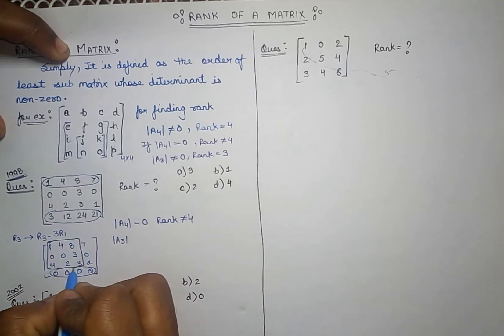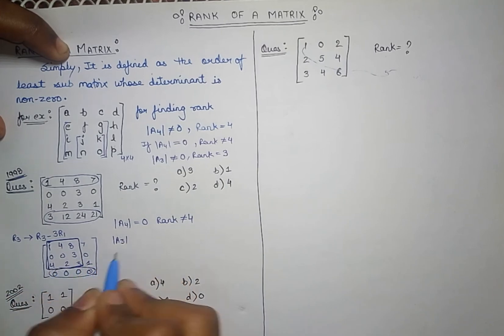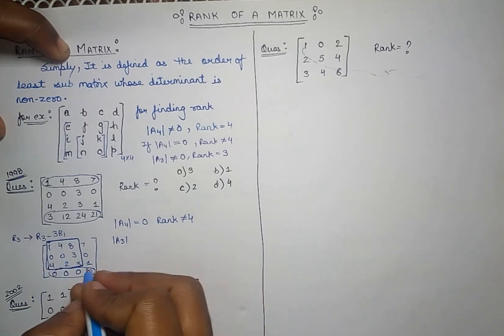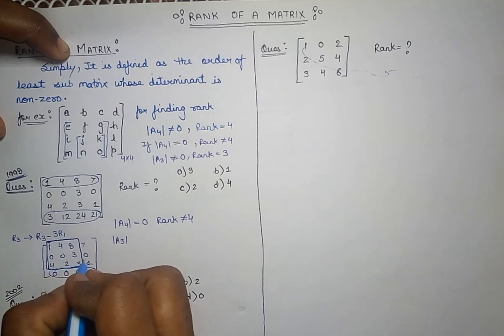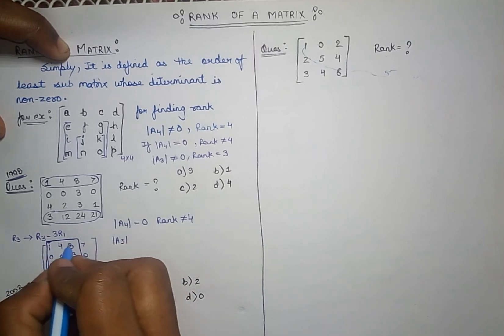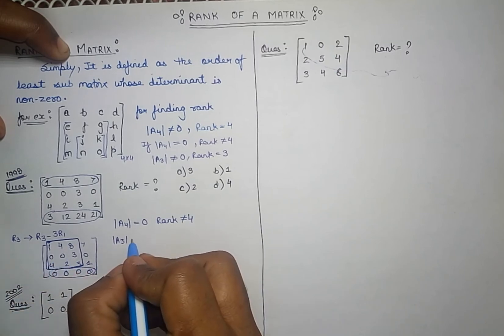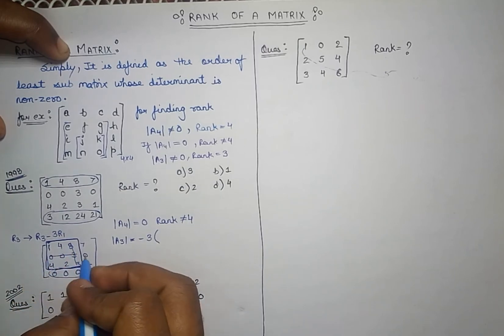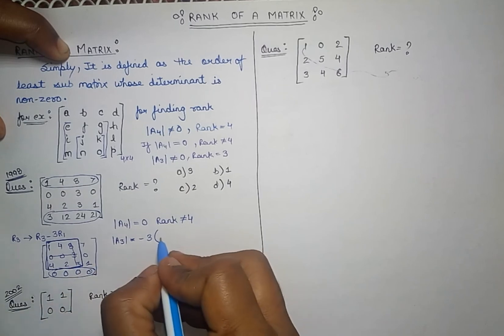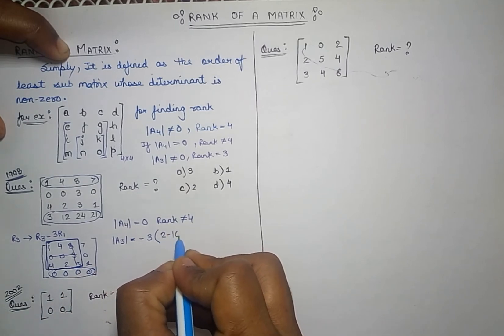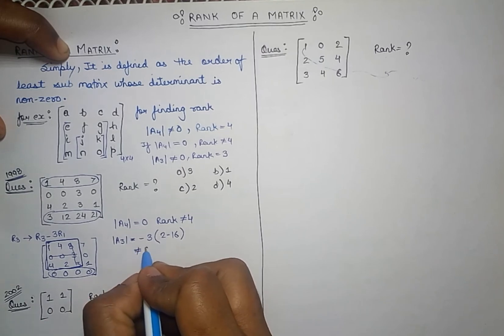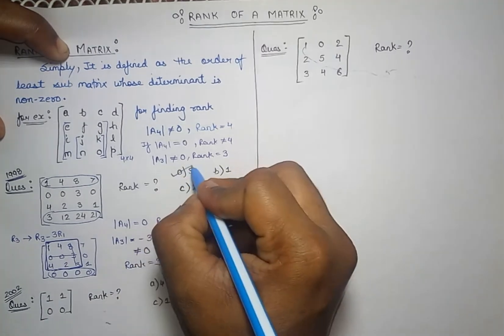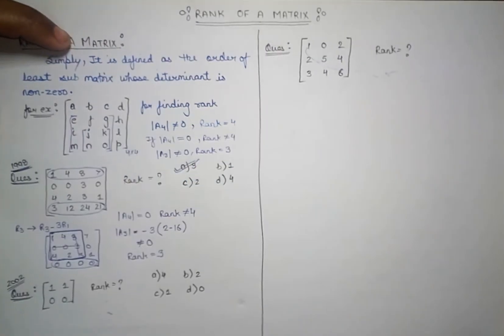Since the last row is zero, there is no need to include any element from it. We select a 3×3 sub-matrix from the remaining rows. Solving its determinant with respect to the first element, we get minus 3 times (2 minus 16), which is clearly not equal to zero. Therefore the rank of the matrix is 3.